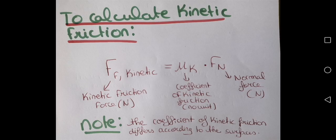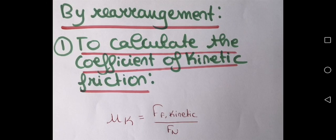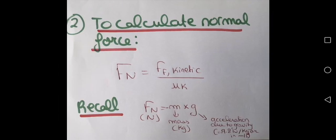Note: the coefficient of kinetic friction differs according to the surfaces. So the coefficient of kinetic friction between a table and the floor is different than the coefficient between a table and sand. By rearrangement, you can calculate the coefficient of kinetic friction using: UK equals force of kinetic friction over normal force. You can also calculate the normal force using: Fn equals force of kinetic friction over UK.